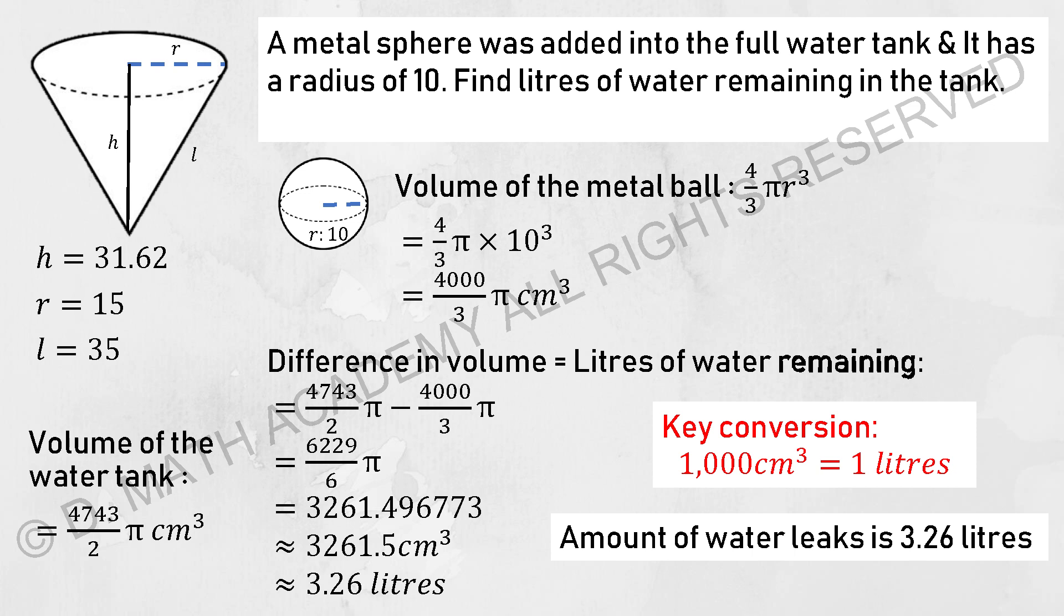The volume of the water tank is the value that we calculated earlier, which is 4743 over 2π. So now you're required to find the metal ball volume. So 4 over 3π times r cubed. You will get 4,000 over 3π. So by finding the difference, you will get the liters of water remaining inside.